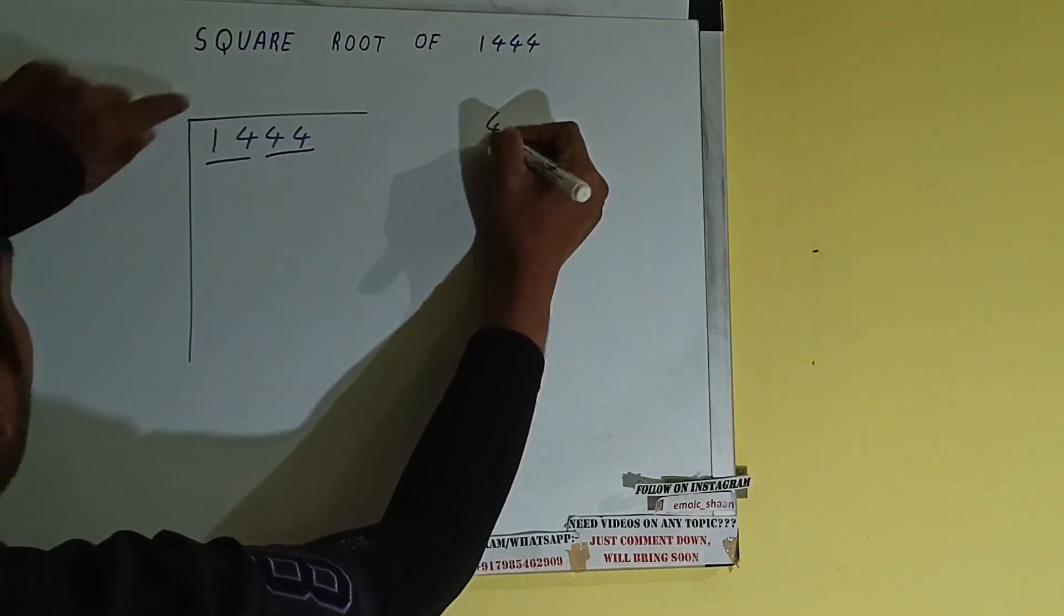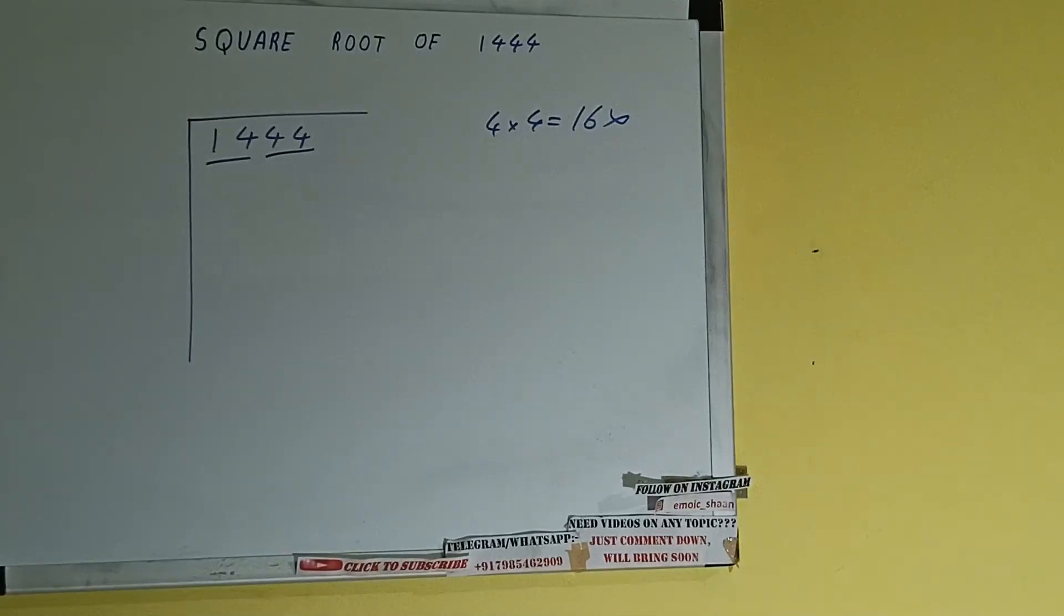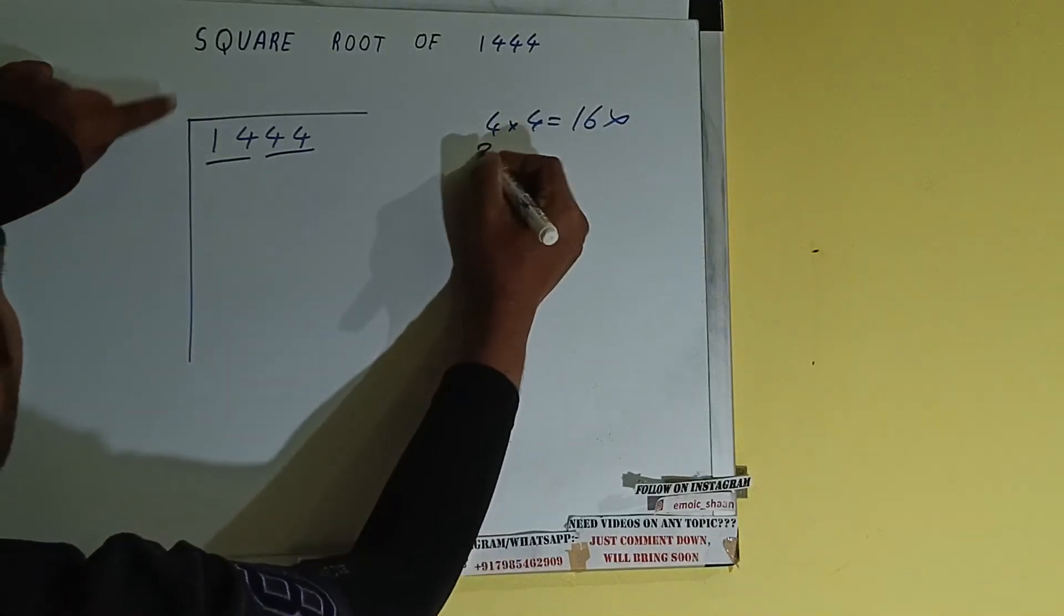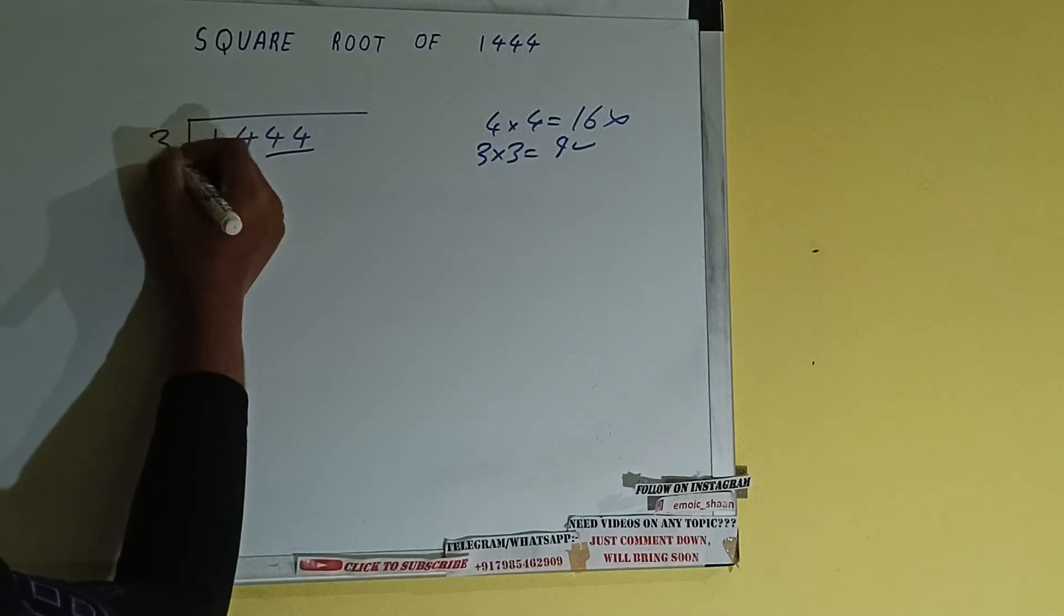So if we write 4 here and 4 here, it will be 16, which is greater than 14, so we cannot take it. If we write 3 here and 3 here, it will be 9, which is good to take. So 3 here and 3 here.